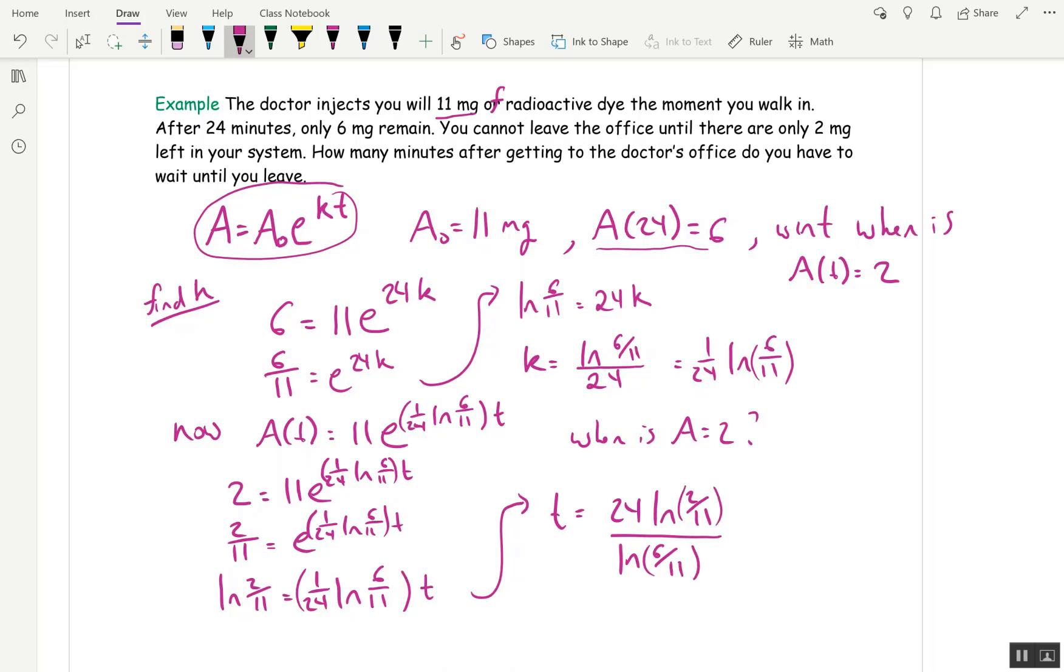And those 11s don't cancel, so don't do that. I mean, we could use properties of logarithms to write those as differences, but it just makes things look worse. So at this point, at this point we're done, except for the fact that my open math is going to want time to, if we go to the nearest minute, I did this and I got 68 minutes.